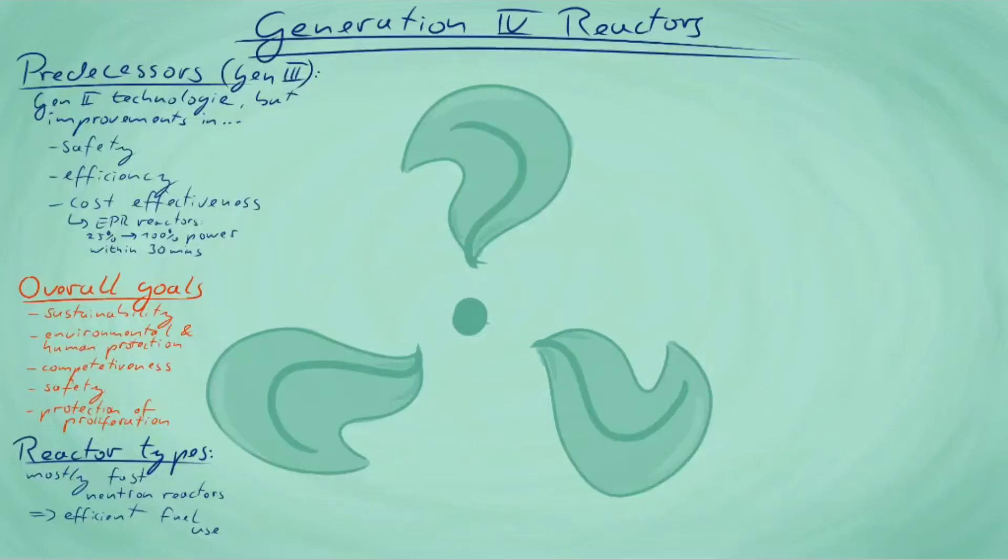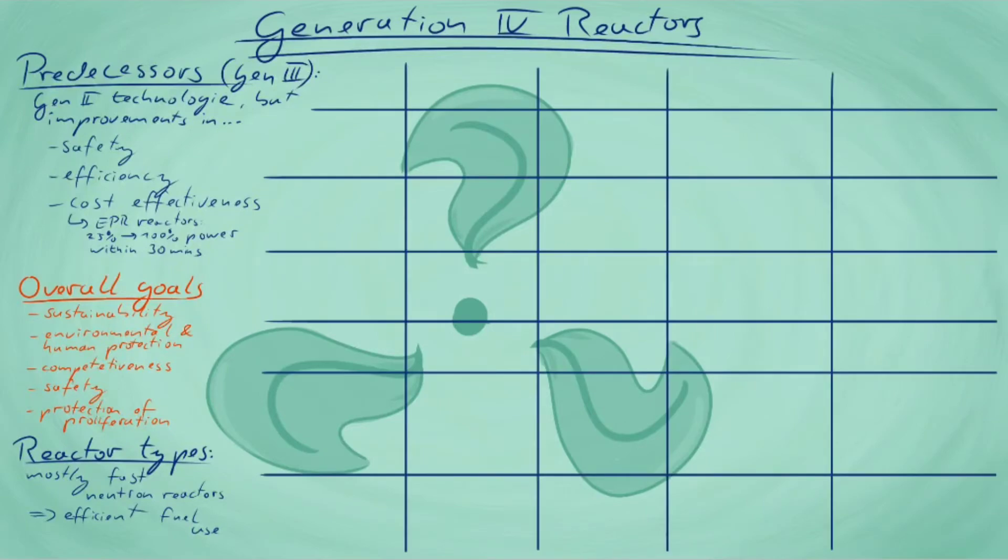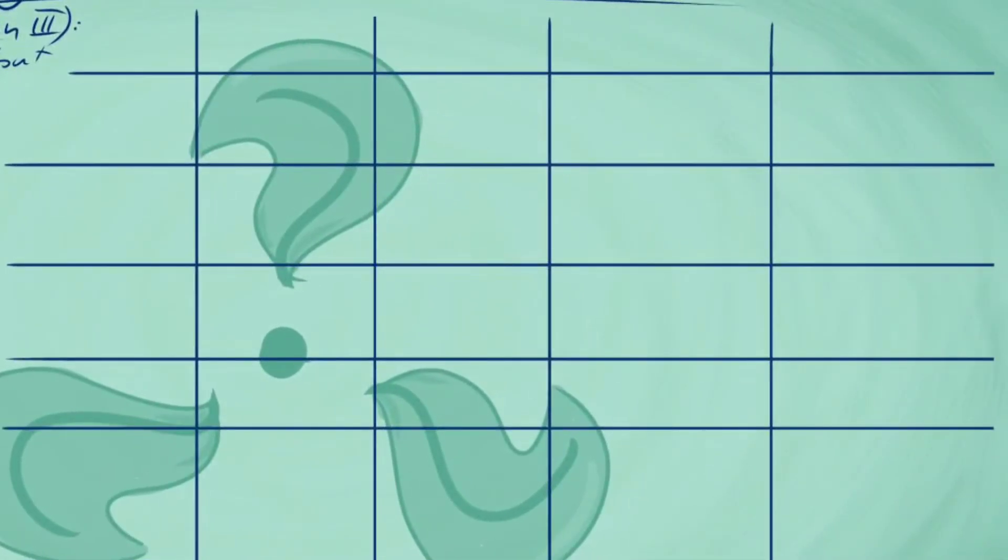The first of this kind is the gas-cooled fast reactor, whose coolant is helium. It operates at very high temperatures, with a coolant exit temperature of about 850 degrees Celsius. As with the other fast reactors, fuel does not need to be enriched, and there are a number of fissile materials that could serve as fuel, for example depleted uranium.